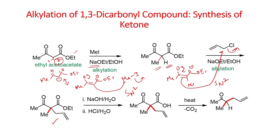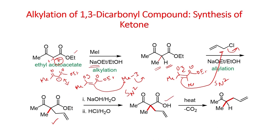Sequentially, you can first do a reaction with methyl iodide, which can be further reacted with base to deprotonate this acidic proton. You can have the enolate; that enolate can further undergo an SN2 reaction with allyl chloride to give this derivative. When you react with base, you can do hydrolysis using sodium hydroxide; hydrolysis of this ester group gives the carboxylic acid. This carboxylic acid, when you heat, undergoes decarboxylation to give this keto derivative.